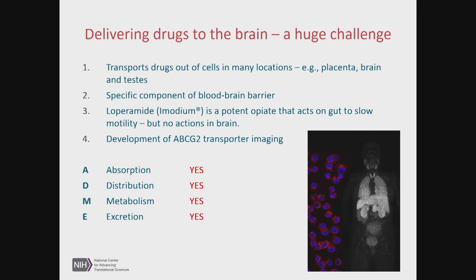We're going to talk about the fact that ABC transporters like PGP transport drugs out of cells in multiple locations and for multiple purposes — the placenta, the brain, testes — really critical organs that the body needs to protect. We'll discuss the blood-brain barrier's structure and function, and the way that P-glycoprotein and other ABC transporters protect the brain. We'll also talk about imaging and directly imaging the function of ABC transporters at the blood-brain barrier, which will convey just how powerful drug transporters are in protecting the brain.